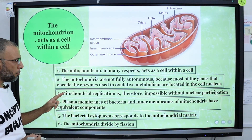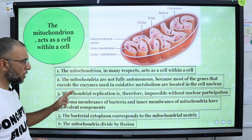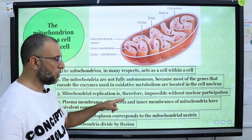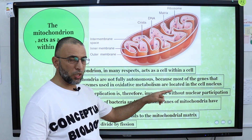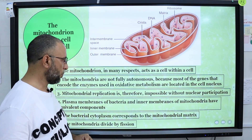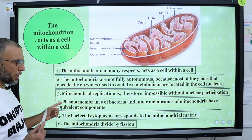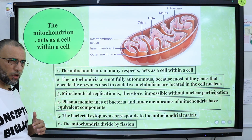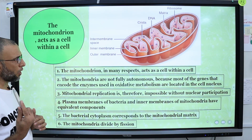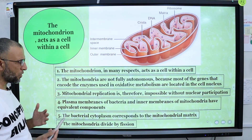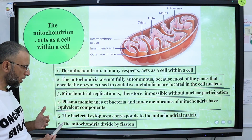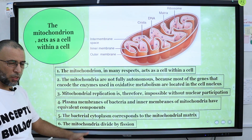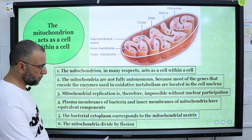Mitochondrial replication is not possible without nuclear participation. The plasma membrane of bacteria and the inner membrane of mitochondria share similarity. Mitochondria divide by fission.